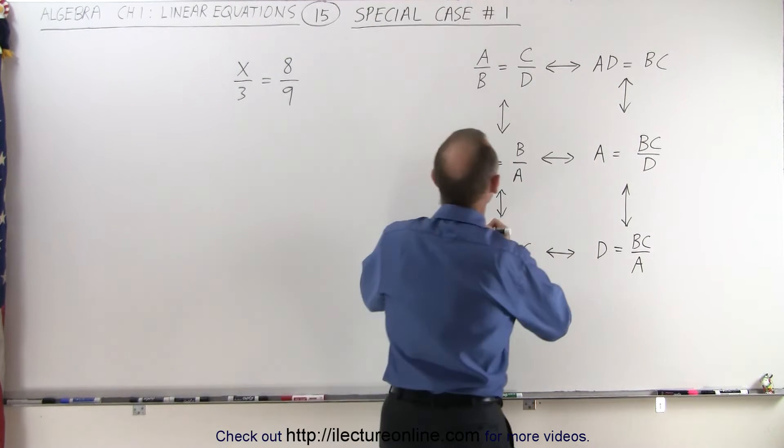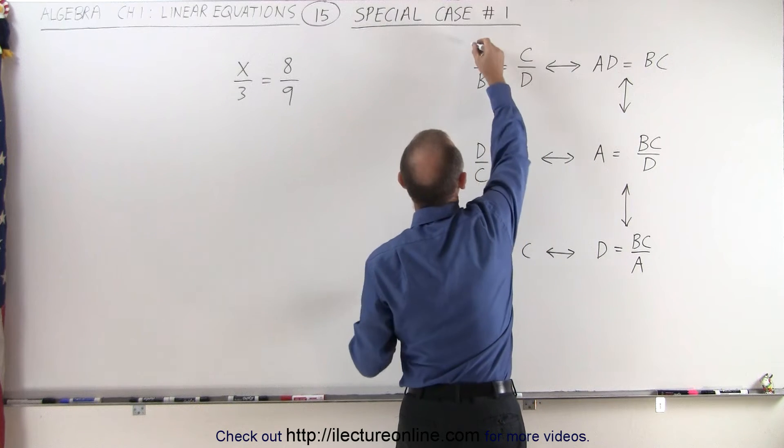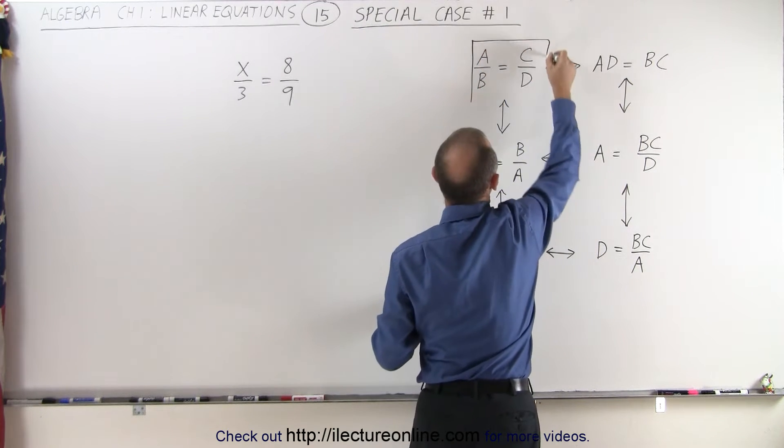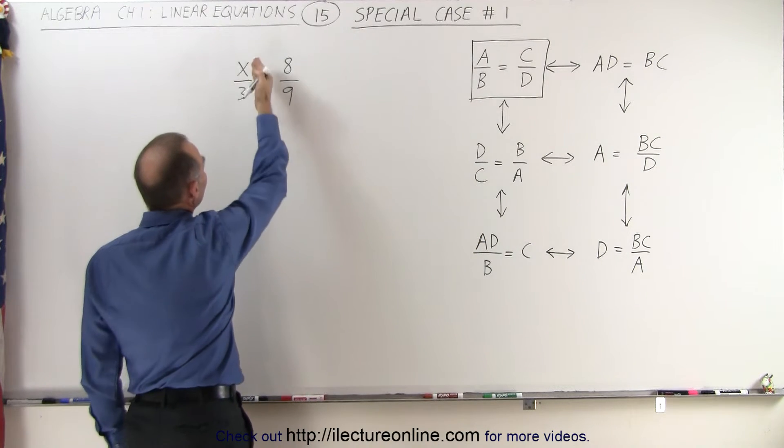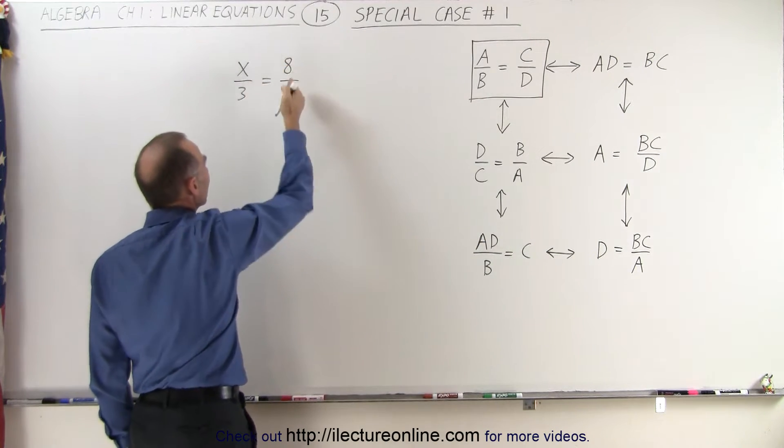The first case is we have something that looks like this. We have two fractions that are equal to each other. A over B is equal to C over D. And here's an example of that. X divided by 3 equals 8 over 9.